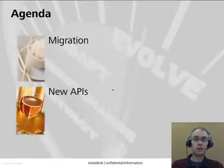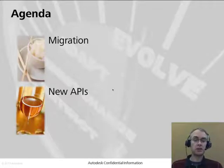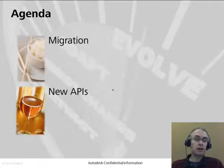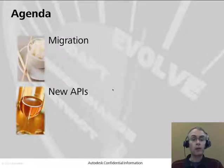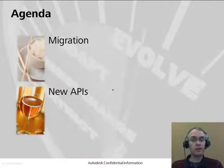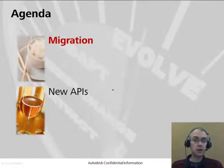So let's get on with the presentation. As usual, we're going to base our presentation on the rice and wine format. The rice is the staple diet — the basics you have to do to get your code to work in the next release of AutoCAD. And wine is the luxury item — the new APIs that you can use to add significant value to your current applications. So let's start first of all with migration.